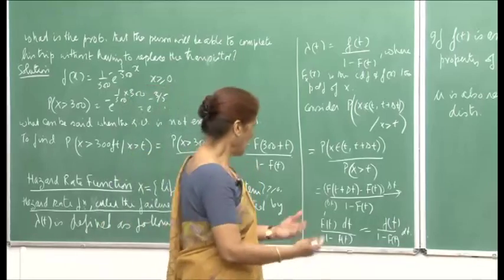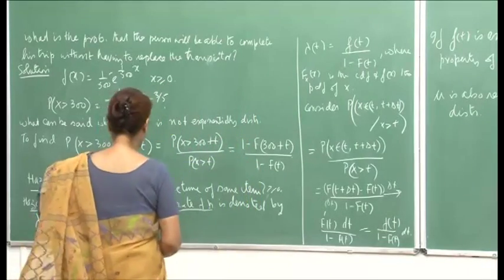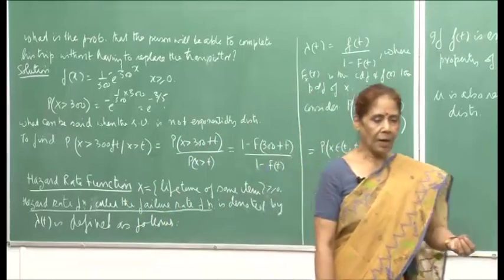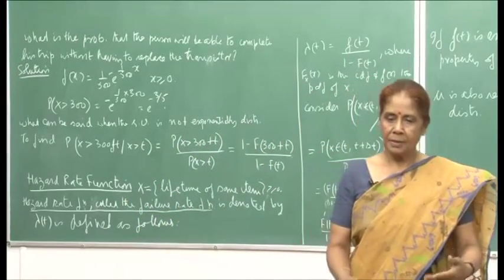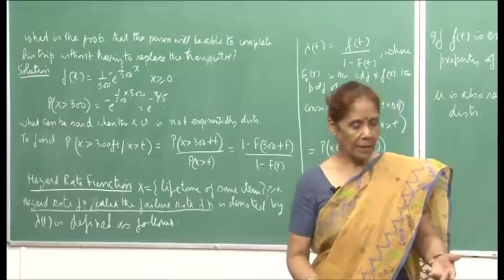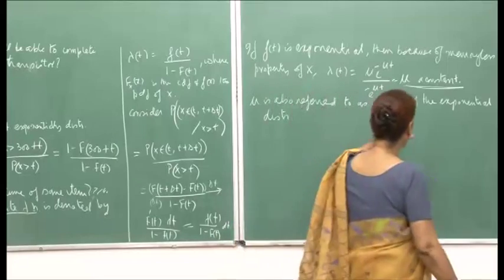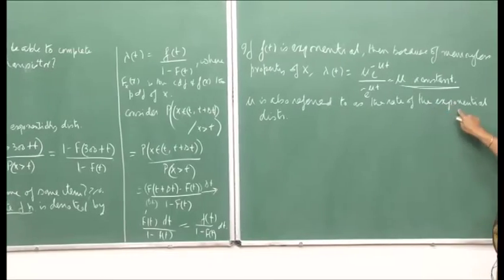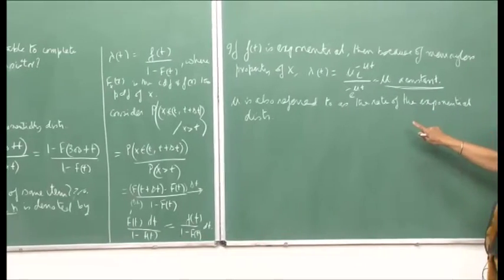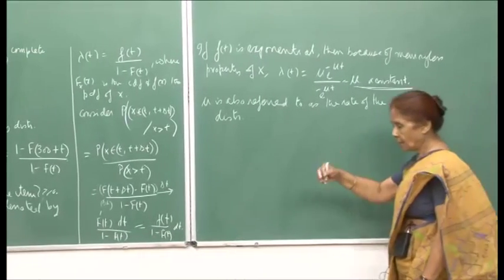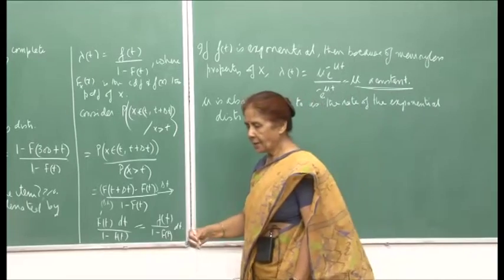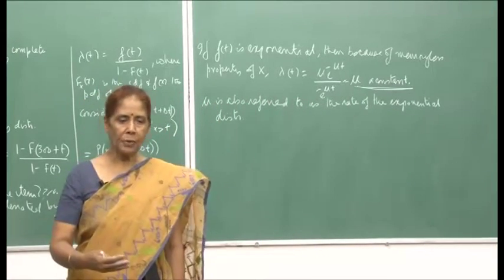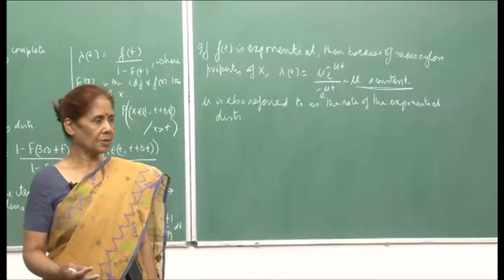Mu is therefore also referred to as the rate of the exponential distribution. It is the rate of failure for the exponential distribution, and 1 upon mu is the mean of the exponential distribution.